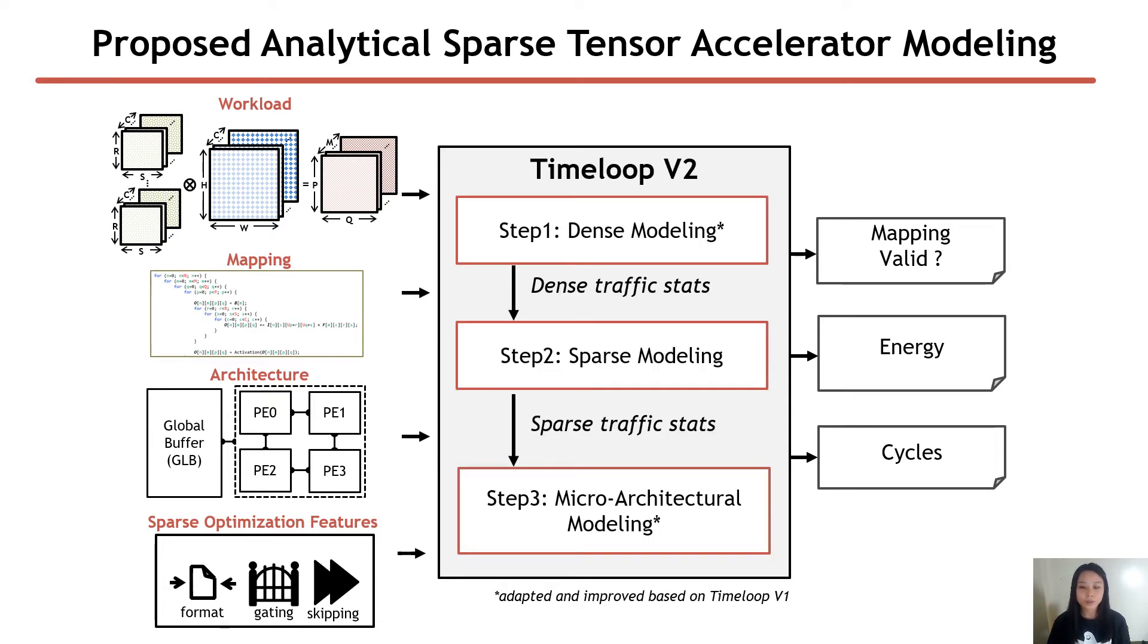At a high level, Timeloop V2 has three steps for modeling sparse tensor accelerators internally.